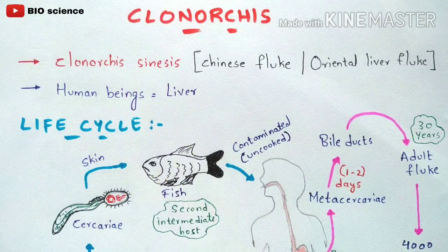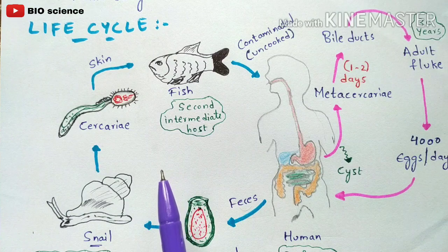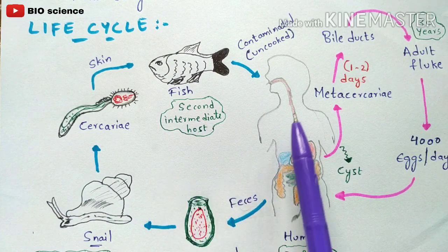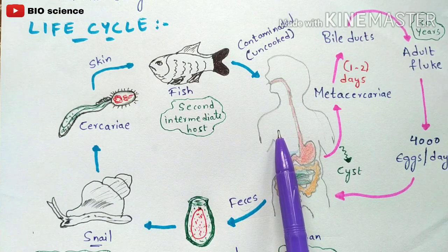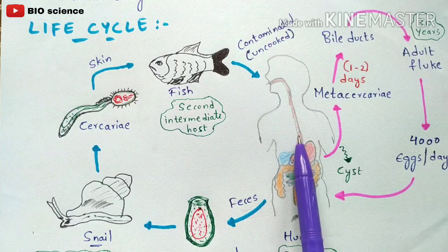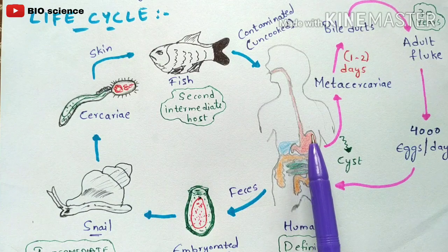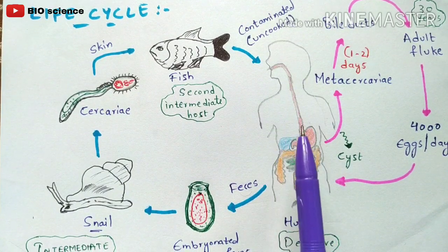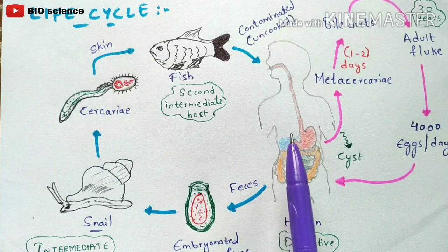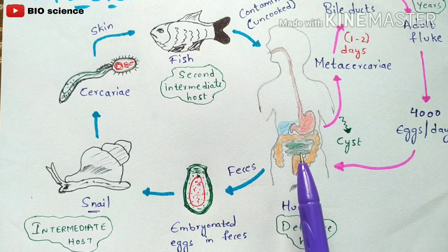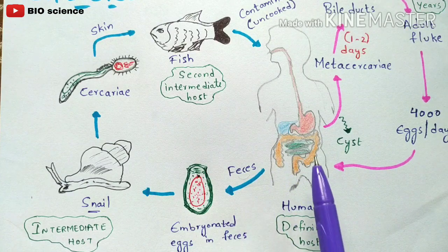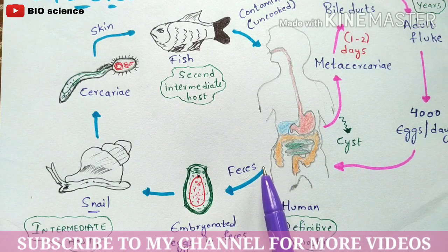Let us discuss the life cycle of Clonorchis sinensis. We consider the human being as the definitive host. This infected human being's body contains the liver fluke, Clonorchis sinensis. Because the body contains the liver fluke, it will release eggs. The human being excretes feces near a pond or lake, and those feces — which contain embryonated eggs of the liver fluke — are released into the water.